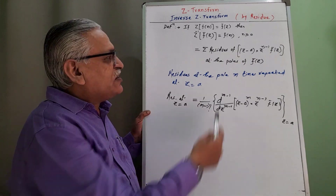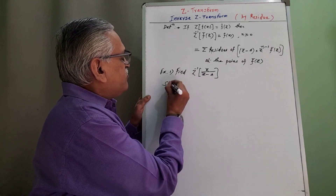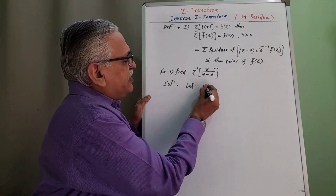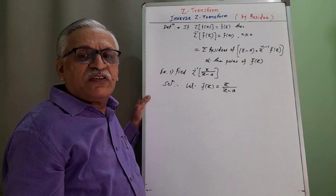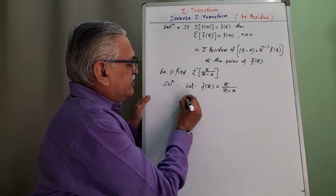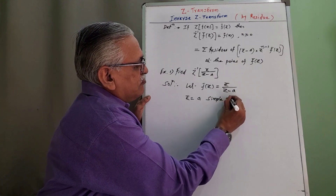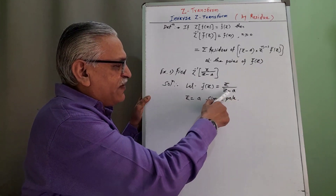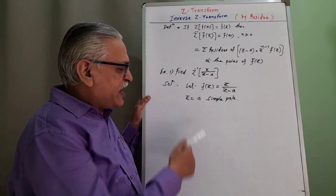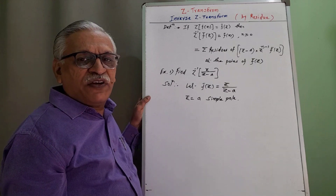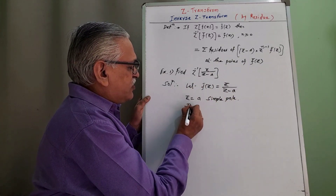First simple example of the first type. Find inverse Z transform of Z/(Z − A). We define the function F̄(Z) = Z/(Z − A). To find the pole, we equate the denominator to zero, giving Z = A as a simple pole. Putting Z = A in the denominator gives A − A = 0, so F̄(Z) becomes infinity — confirming Z = A is a pole. We then multiply F̄(Z) by Z^(N−1) on both sides.